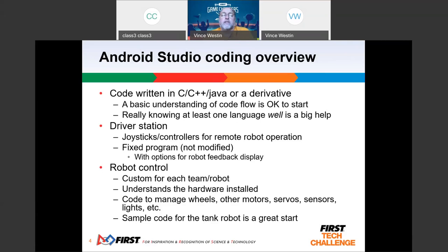There are a couple of pieces. There's the driver station control — the phone that the drivers use, plugged into a joystick, which allows you to drive the robot. It's also where you do configuration options like which motors are plugged in where. The driver station program is fixed — the final one for the season will be passed out and updates distributed in the GitHub package. You don't need to download anything off the Play Store. Just take the APK and do the install using Android Studio; odds are the Play Store will give you the wrong version.